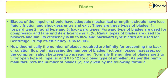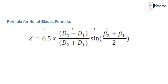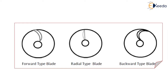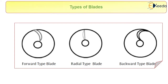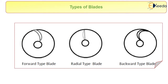As per pump manufacturing, the number of blades can be given by a formula where d1 and d2 are the inner and outer diameters and beta1 and beta2 are the blade angles. These correspond to the three blade types: forward, radial, and backward, as shown in the flow diagrams.